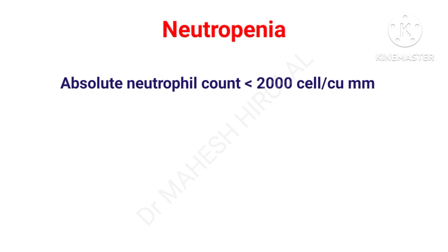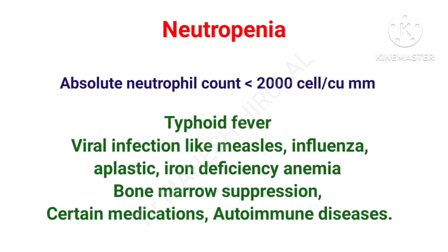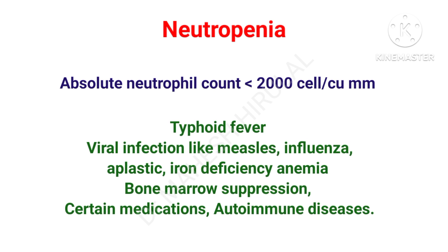Decrease in neutrophils is called neutropenia, which must be confirmed by estimation of absolute neutrophil counts. If neutrophil count is less than 2,000 cells per cubic mm, it can be considered neutropenia. Neutropenia is most commonly seen in typhoid fever, viral infections like measles and influenza, aplastic and iron deficiency anemias, and certain medications and autoimmune disorders. Typhoid fever is an exceptional bacterial infection where we observe low WBC, low neutrophils, but increased lymphocytes — called relative lymphocytosis.